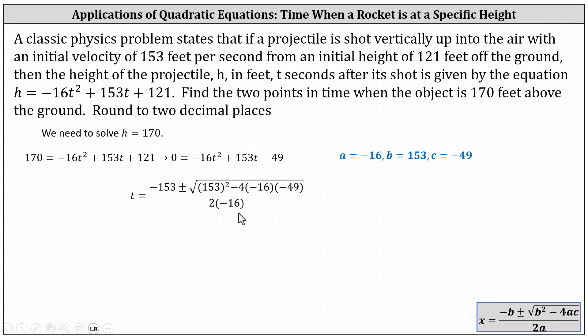Simplifying gives us t equals negative 153 plus or minus the square root of 20,273, all divided by negative 32. Because of the plus or minus, we have two solutions for t, which is what we expect — one time when the projectile is on the way up and one time when the projectile is on the way down, when it will reach a height of 170 feet above the ground.